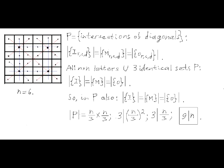It's also clear that the total set of letters from this count consists of all N squared points in the entire grid — which has equal numbers of I, M, and O — plus three identical copies of set P. This is because each element of set P belongs to one row, one column, and two diagonals. From this, we can conclude that the union of these three identical copies of P contains equal numbers of I, M, and O. The fact that these three sets P are identical is a central point in this reasoning. If three identical sets include equal numbers of I, M, and O, we can conclude that each individual set P also has equal numbers, which means the number of elements in set P is divisible by 3.